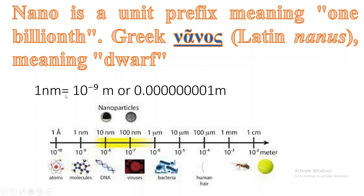To see this nanometer scale in our day-to-day life: one atom is approximately 1 times 10 raised to minus 10 meters; molecules are around 1 nanometer; DNA is around that same size; a virus is approximately 100 nanometers; bacteria is within the micrometer range; and a human hair is nearly 1 centimeter — dividing that gives you the range of nanometers.